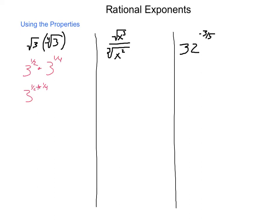So this is 3 to the 1 half plus 1 fourth power. And what's 1 half plus 1 fourth? That is 3 to the 3 fourths power. Converting it back, we get the fourth root of 3 cubed. 3 cubed is 27, so we have the fourth root of 27. So we're able to move things back and forth in different methods.